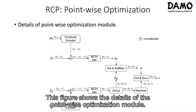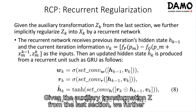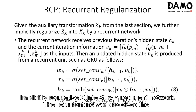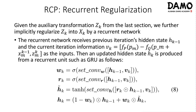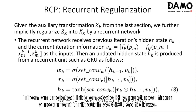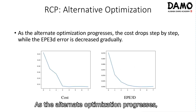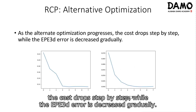This figure shows the details of the point-wise optimization module. Given the auxiliary transformation Z, we further implicitly regularize Z into X by a recurrent network. The recurrent network receives the previous iteration's hidden state H and the current iteration information as inputs. An updated hidden state H is then produced from a recurrent unit such as GRU. As the alternate optimization progresses, the cost drops step by step while the EPE3D error decreases gradually.